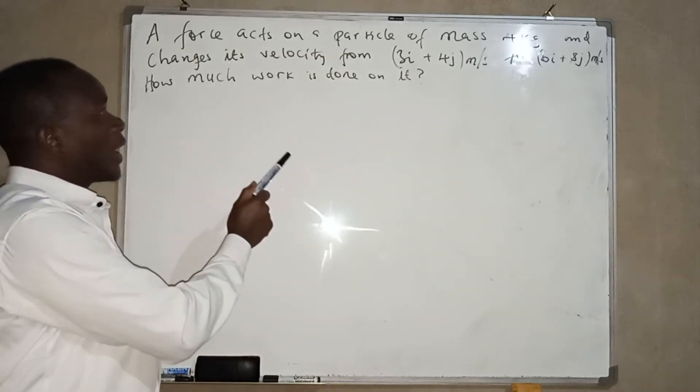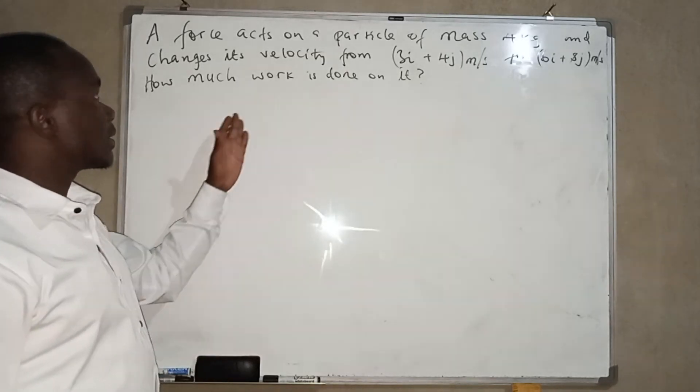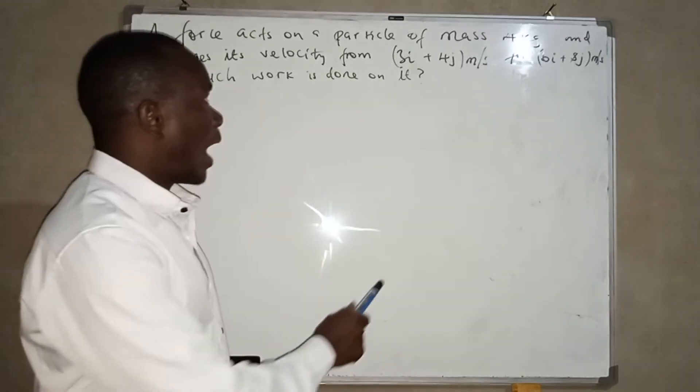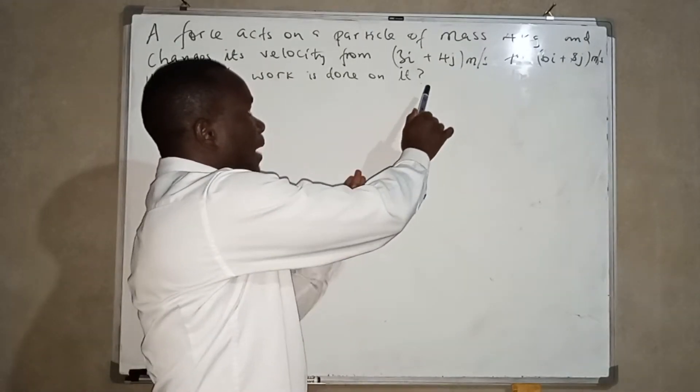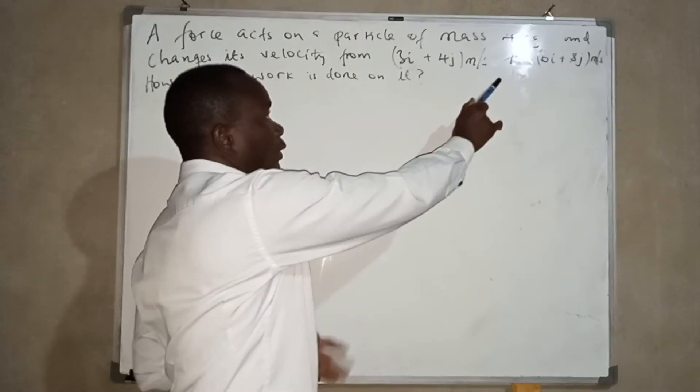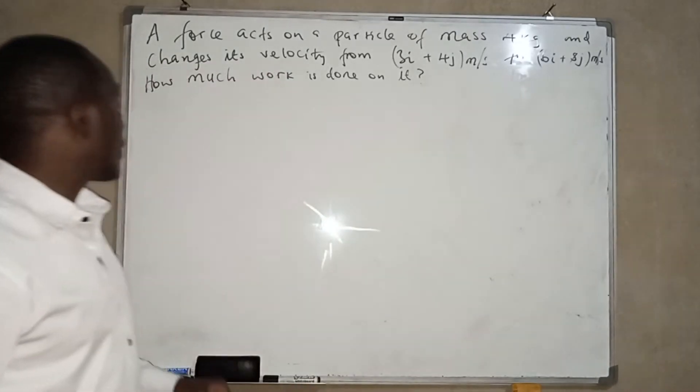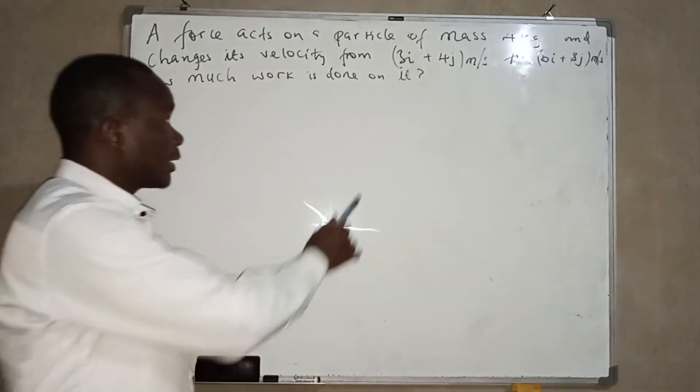The question says: a force acts on a particle mass 4kg and changes its velocity from 3i plus 4j meters per second to 6i plus 8j meters per second. How much work is done on it?